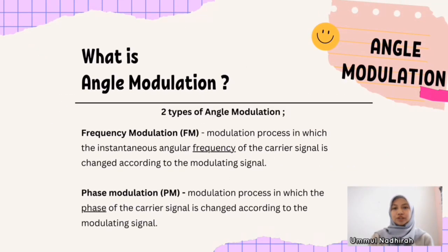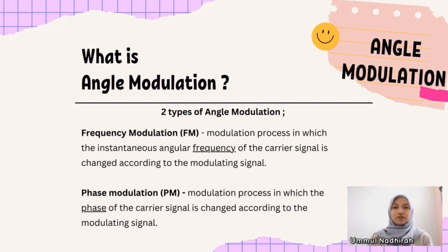Moving on to Angle Modulation, which consists of two types: Frequency Modulation and Phase Modulation. Frequency Modulation (FM) is the modulation process in which the instantaneous angular frequency of the carrier signal is changed according to the modulating signal. Phase Modulation (PM) is defined as the modulation process in which the phase of the carrier signal is changed according to the modulating signal.